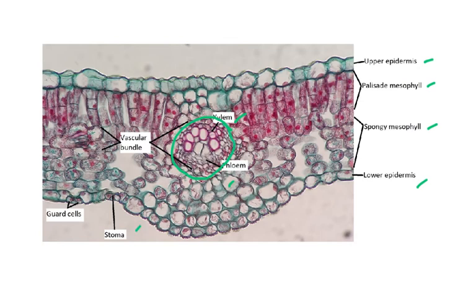Because the syllabus mentions photomicrographs and other diagrams, you need to understand that you can be given a photomicrograph — an actual slide made of a leaf — which you can make in the lab. It is not a very difficult thing to do.